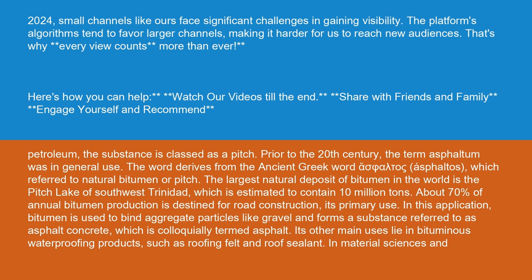Prior to the 20th century, the term asphaltum was in general use. The word derives from the ancient Greek word asphaltos, which referred to natural bitumen or pitch. The largest natural deposit of bitumen in the world is the Pitch Lake of southwest Trinidad, which is estimated to contain 10 million tons. About 70% of annual bitumen production is destined for road construction, its primary use.